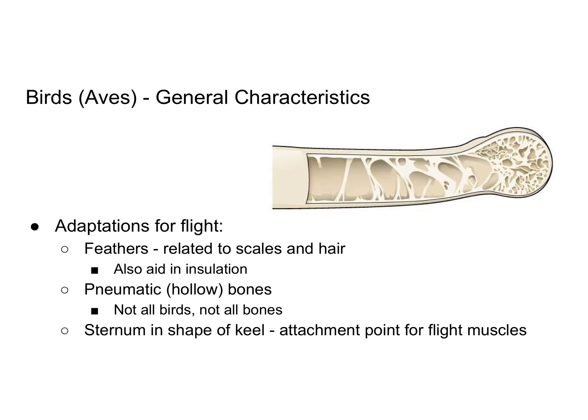Some adaptations that help birds to fly: they have feathers, which are related to scales and hair, and they contain the protein keratin. The feathers also aid in insulation, helping with that endothermic function by trapping heat and keeping the bird warm.